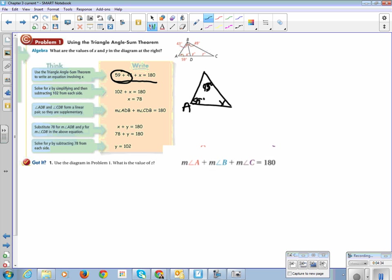So to find x, we can say 59 plus 43 plus x equals 180. I combine my like terms. Remember when we spent all that time solving equations? This is why. I combine my like terms to get 102, and then I subtract 102 from both sides and get x equals 78.